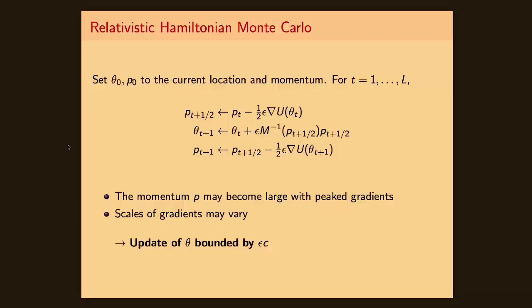When your target distribution has very peaked gradients, the momentum can be too large. This is not a problem in this setting as the parameter change cannot be larger than epsilon times c, which is the speed of light. So, epsilon times c is preventing the parameter from taking too large steps, which allows us to control the stability of the sampler.